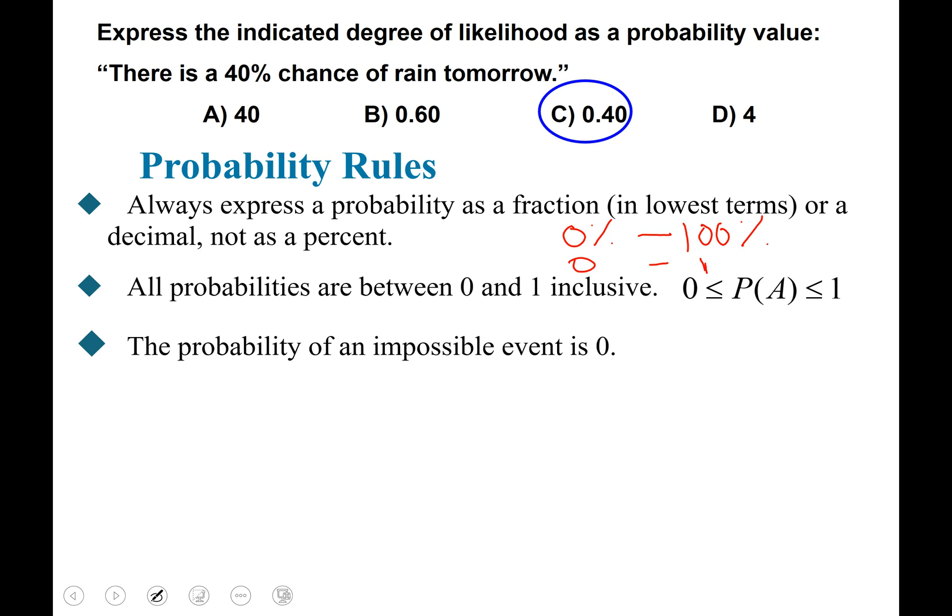The probability of an impossible event is zero. Think zero percent chance so probability is zero. The probability of an event that is certain to occur is one. Think of one hundred percent chance as a decimal is one.